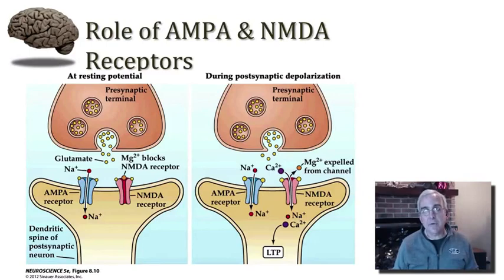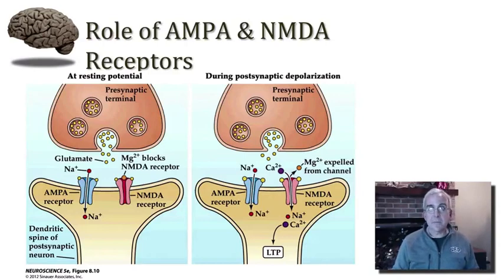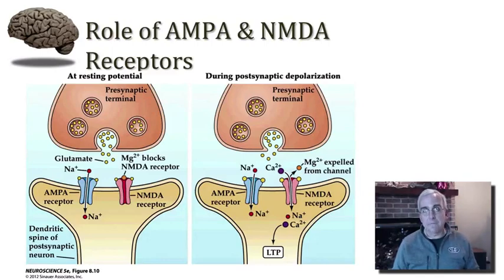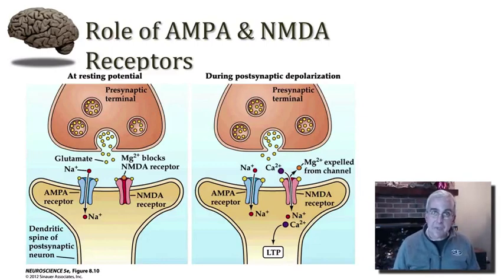These two different kinds of receptors are both ionotropic receptors for glutamate, which means that the binding site for glutamate is part of an ion channel. Both of these ionotropic receptors can therefore mediate rapid conductances in the postsynaptic cell. Let's look at how they both contribute to the induction and the maintenance of long-term potentiation.